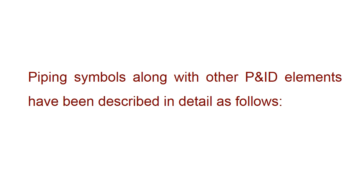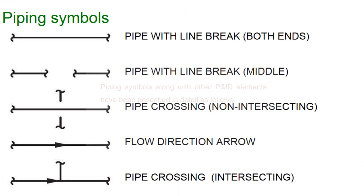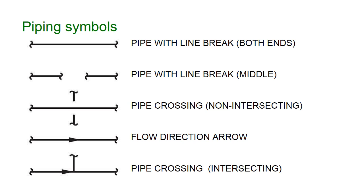Piping symbols along with other P&ID elements have been described in detail as follows. Piping symbols include: pipe with line break at both ends, pipe with line break in the middle, pipe crossing non-intersecting, flow direction arrow, and pipe crossing intersecting.